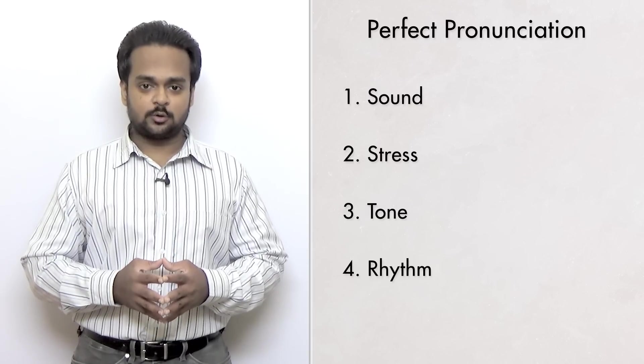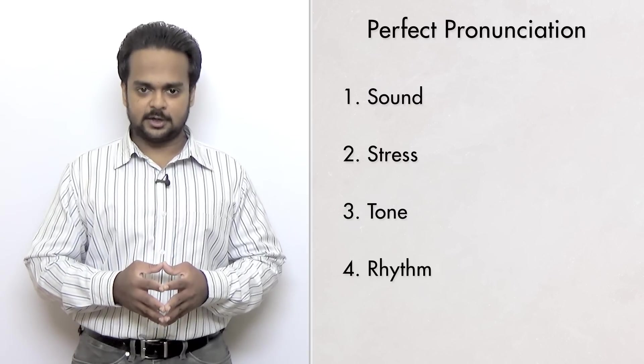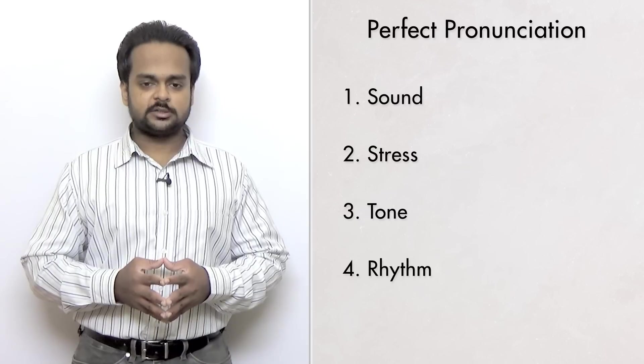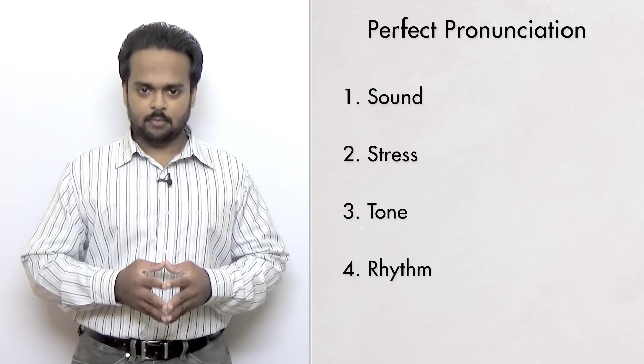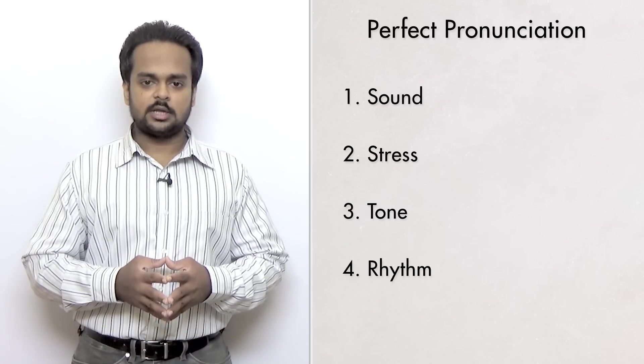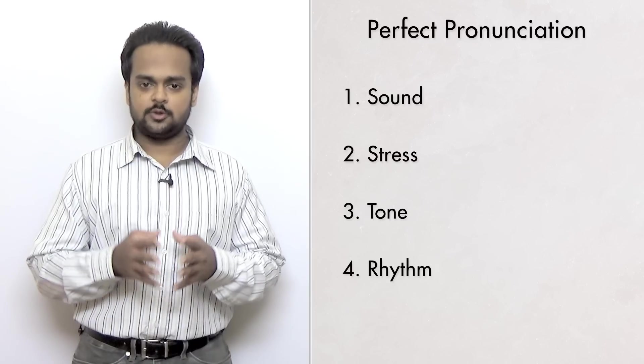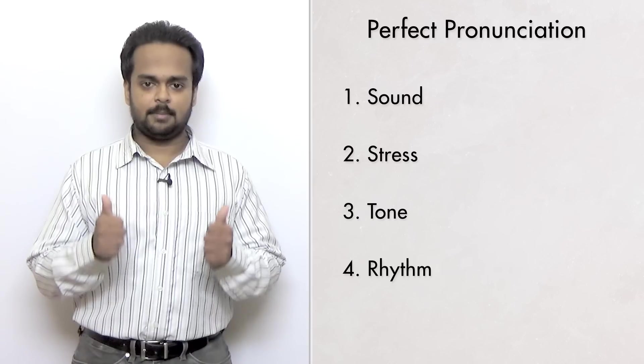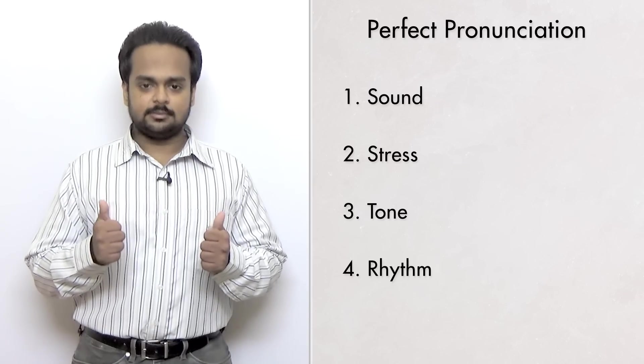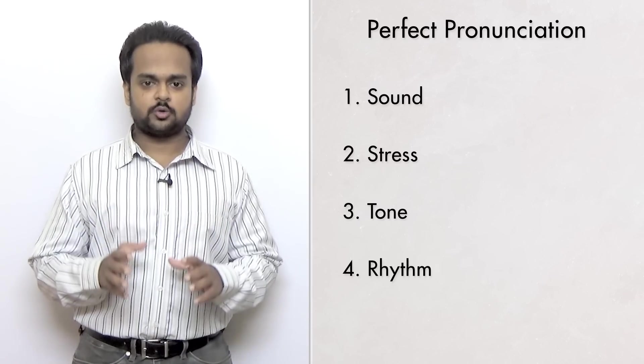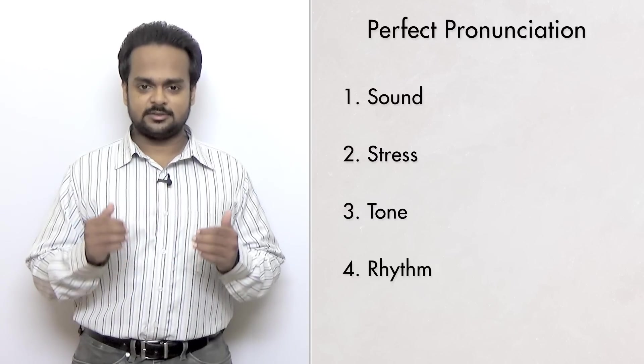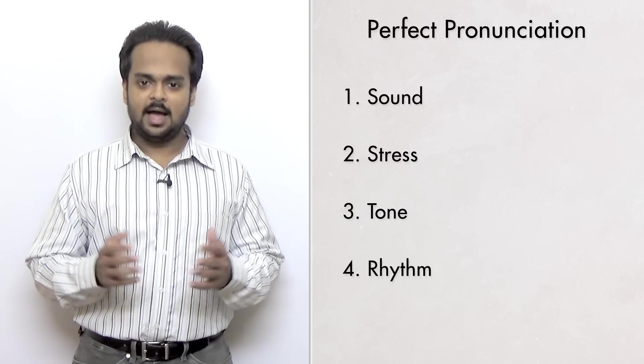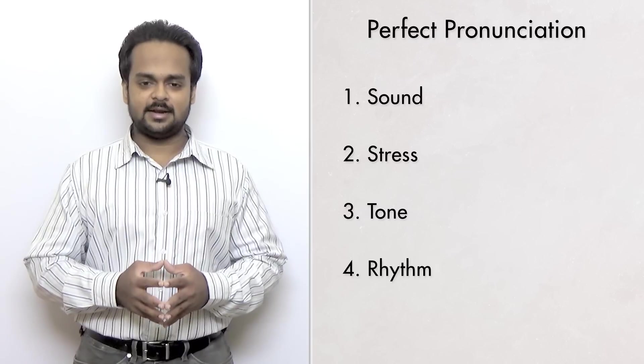Alright, those are the four secrets to perfect English pronunciation – sound, stress, tone, and rhythm. Remember to practice regularly with the exercises I shared with you in this video. And if you liked this lesson, give it a thumbs up by hitting the like button. Also subscribe to this channel by clicking the subscribe button to get my latest lessons right here on YouTube. Happy learning and I will see you in another lesson soon.